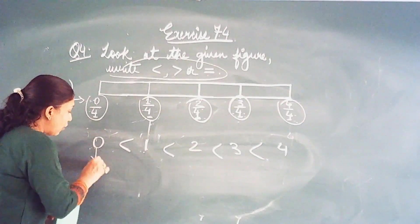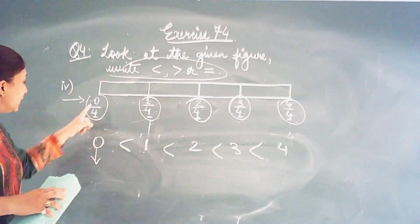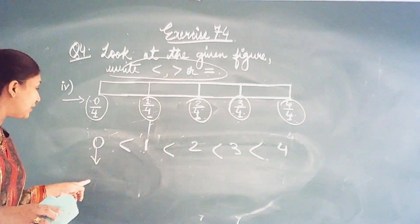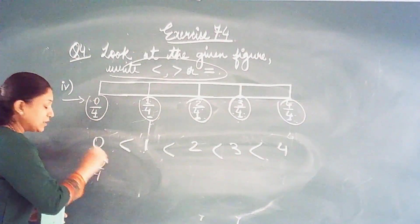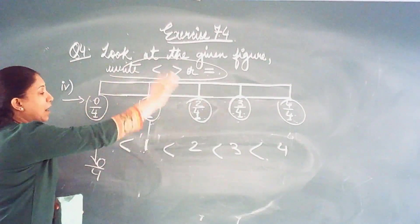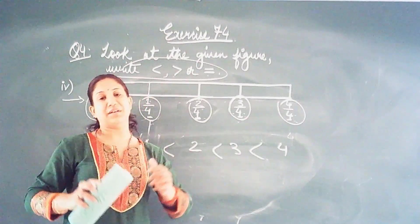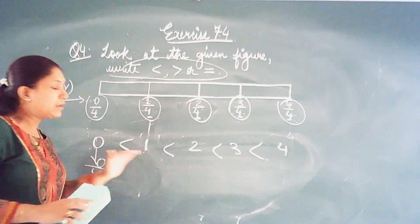One more thing. From this figure we also come to know. See the smallest value is the leftmost part of the fraction. 0 by 4 is the smallest value. And among this if the question is write down the smallest and greatest. So you check the order.